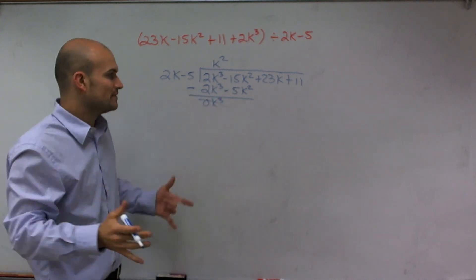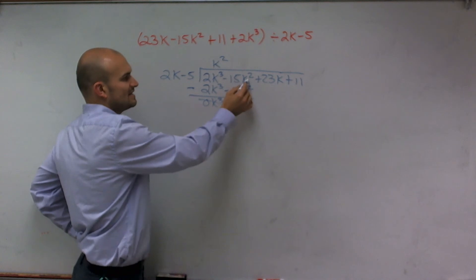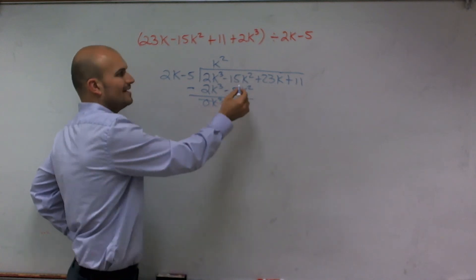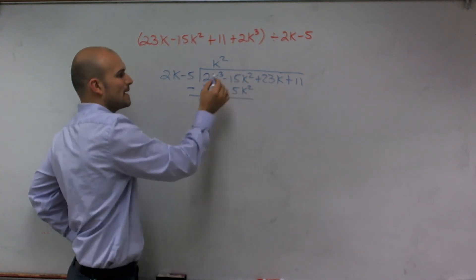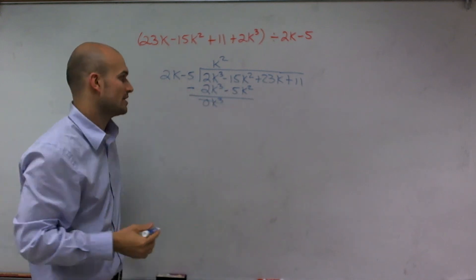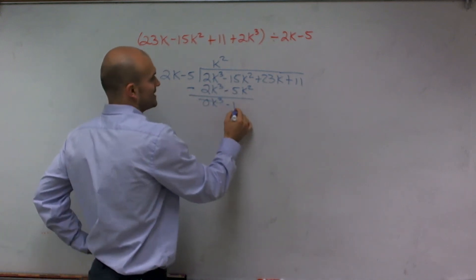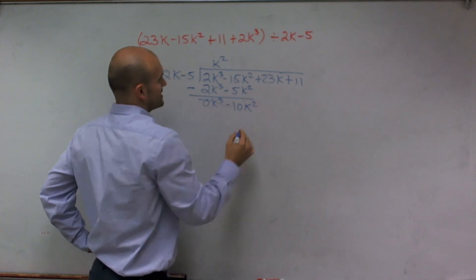Then, it's very important for you to understand this. It's not negative 15k squared minus 5k squared. It's negative 15k squared minus a negative 5k squared, which ends up giving me a negative 10k squared.